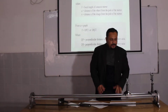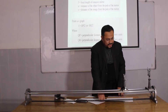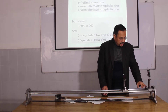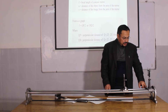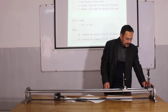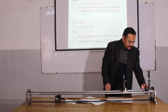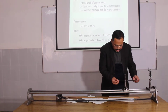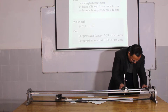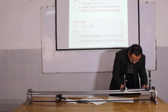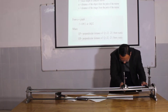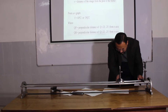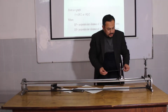First of all you have to start with the index correction. For finding the index correction of this experiment, you clamp the mirror at the zero position and then measure the knitting needle from the optical bench. It reads 32 centimeters.